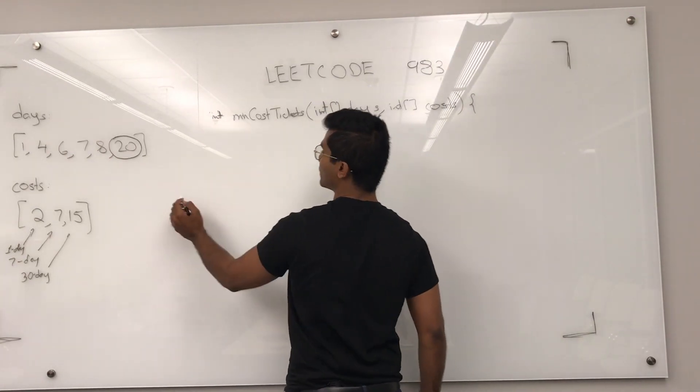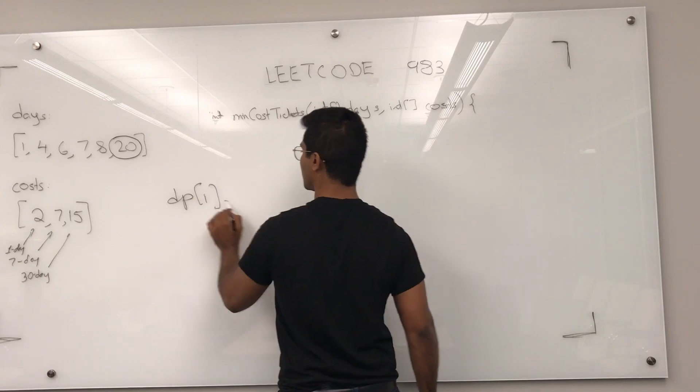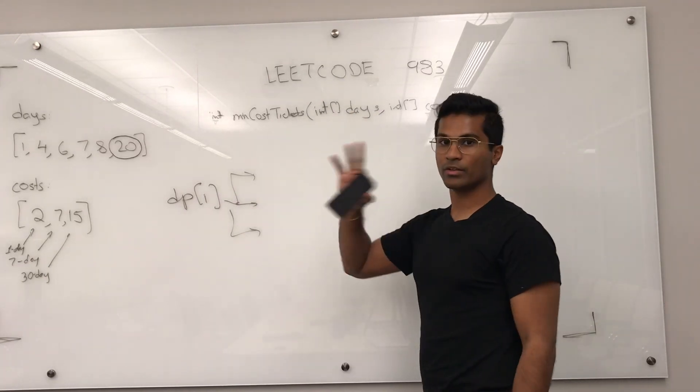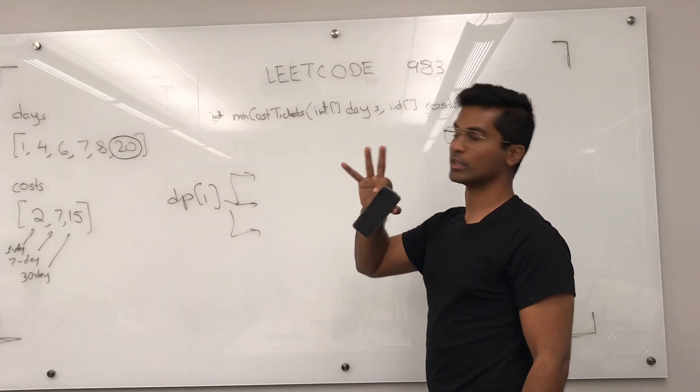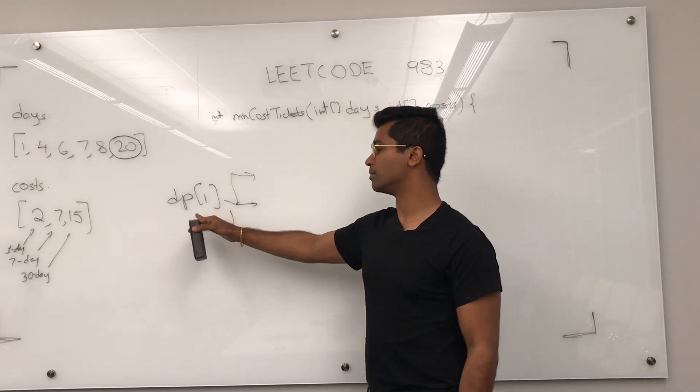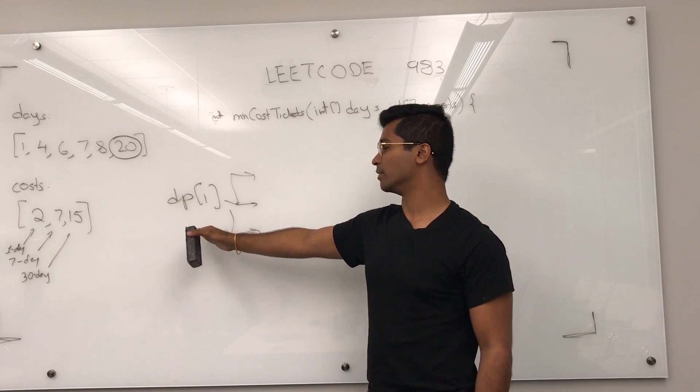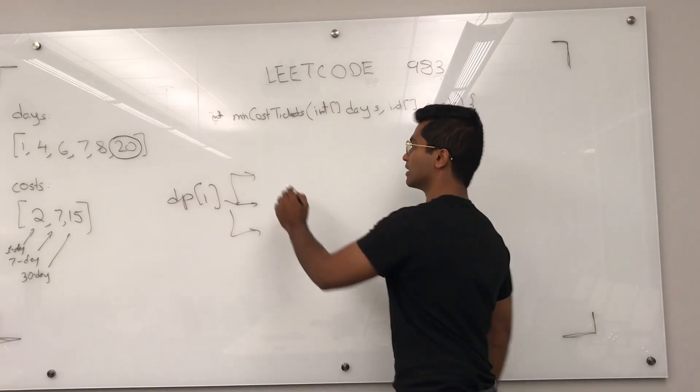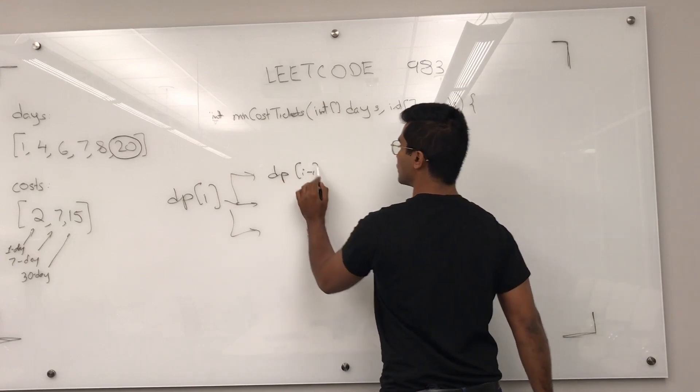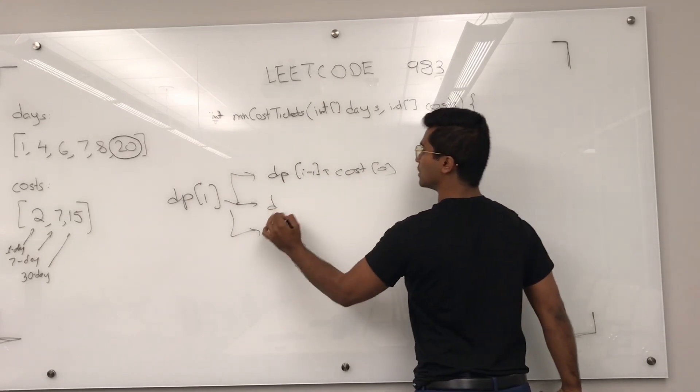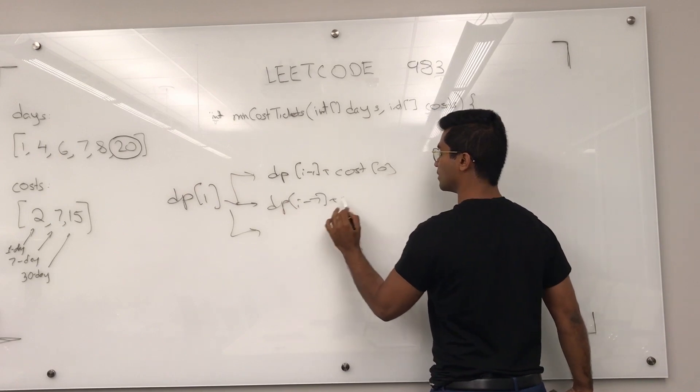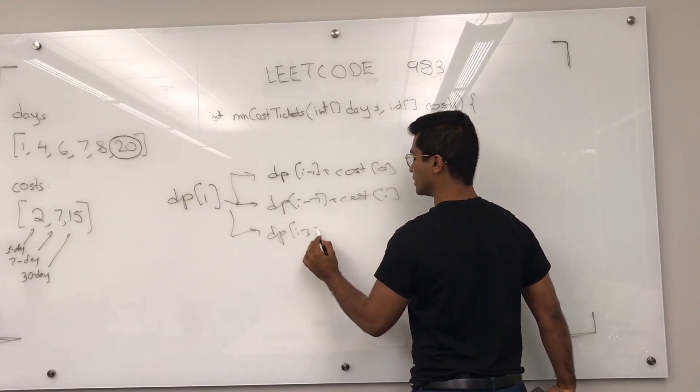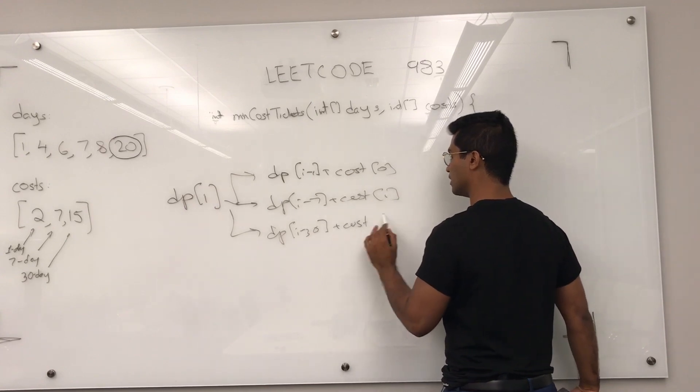So first we have to say DP of i is going to be dependent on the three different ways we can travel. To have traveled on day i, we can either have bought a one day ticket, a seven day ticket, or a thirty day ticket. So it's going to be DP of i minus one plus cost of zero, DP of i minus seven cost of one, DP of i minus thirty cost of two.